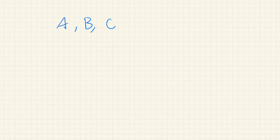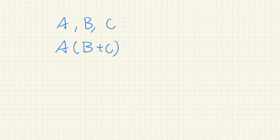Let's say we have matrices A, B, and C. We do not explicitly specify the sizes of these matrices, but we assume that whenever we do addition or multiplication between these matrices, those sizes are compatible with the given operation. For example, we have the following distributive law: A times B plus C is equal to AB plus AC.